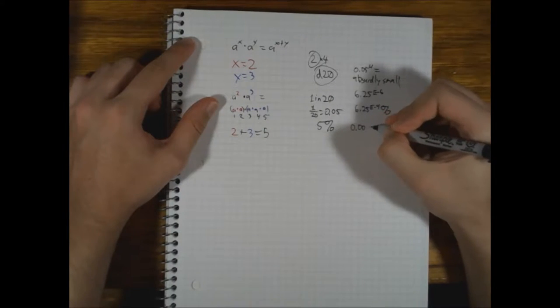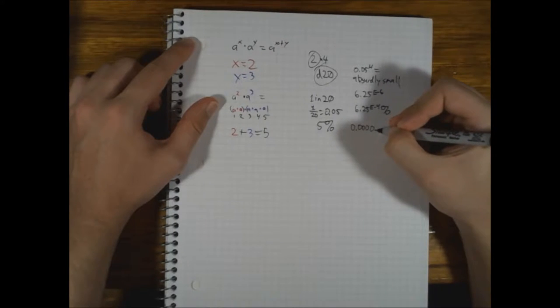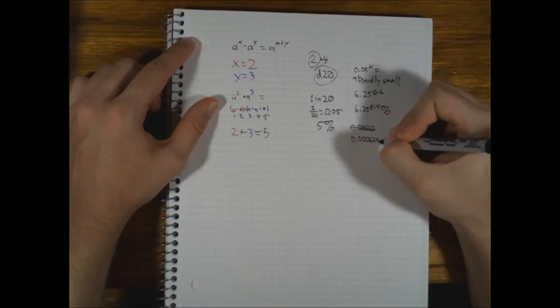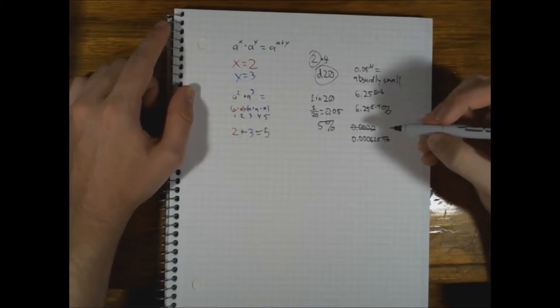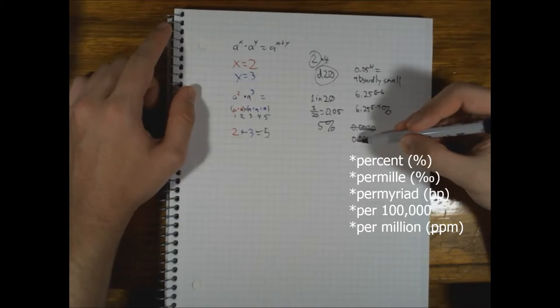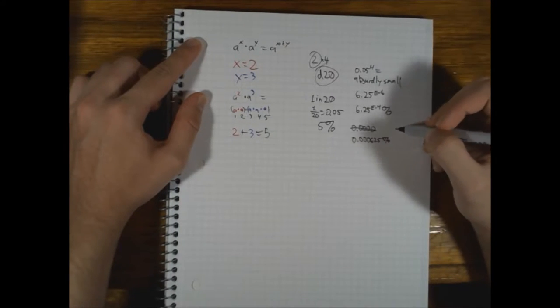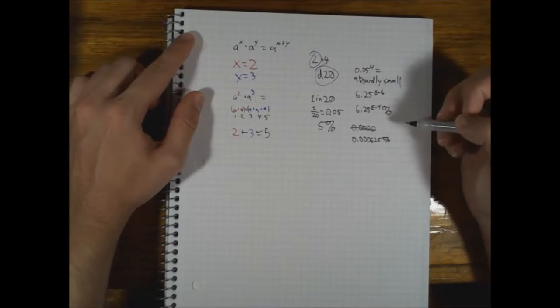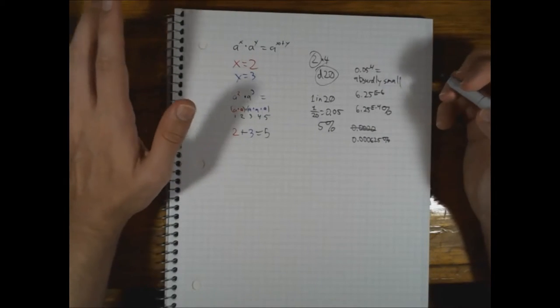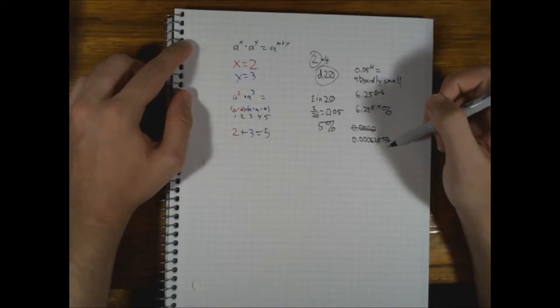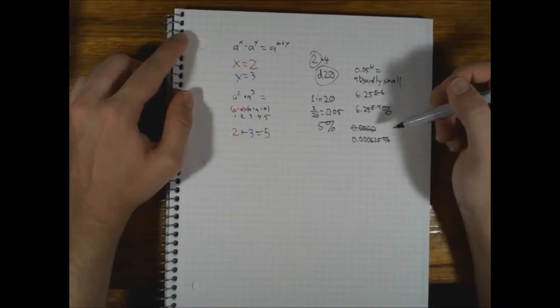So, it would be 0.000625 percent. So, that's percent per mil, per 10 mil, per 100 mil, per million. So, 6.25 per million, effectively. Which is crazy. That's just to roll the same number four times in a row. 6.25 per million.